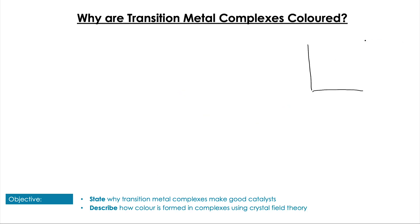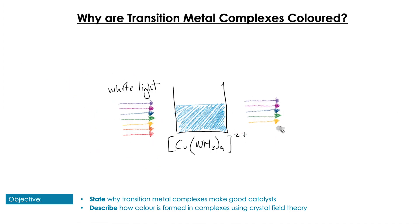So what is it about transition metal complexes that make them colored? If we just take the example of this tetrahedral complex—copper with four ammonia ligands and an overall charge of 2+. We recognize that it's blue. What is the significance of it being blue?